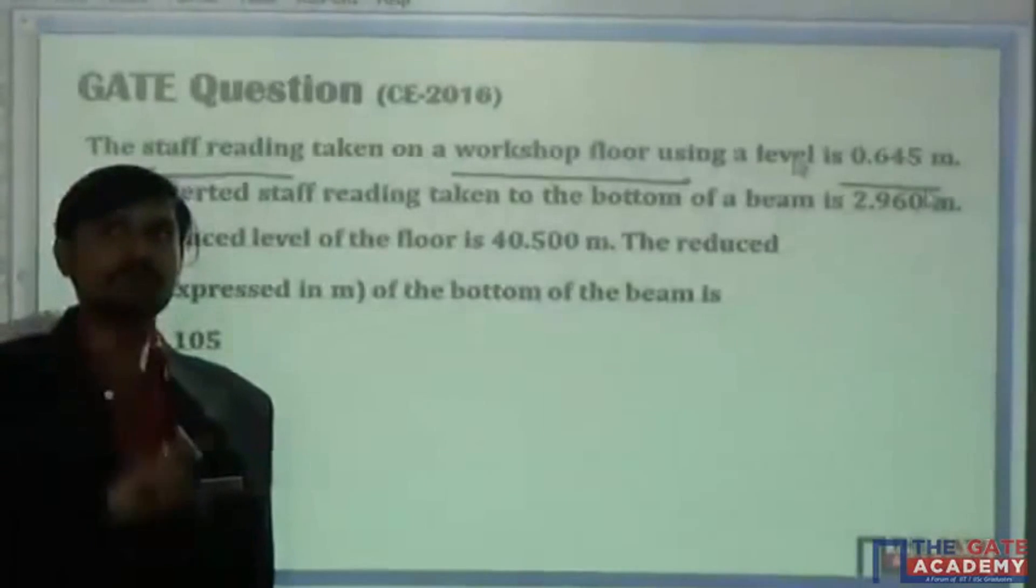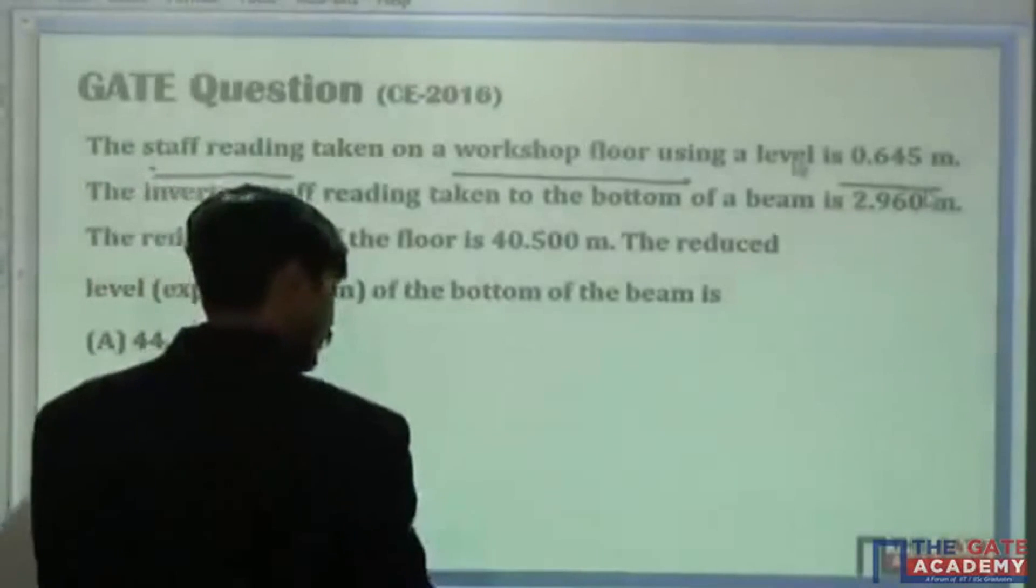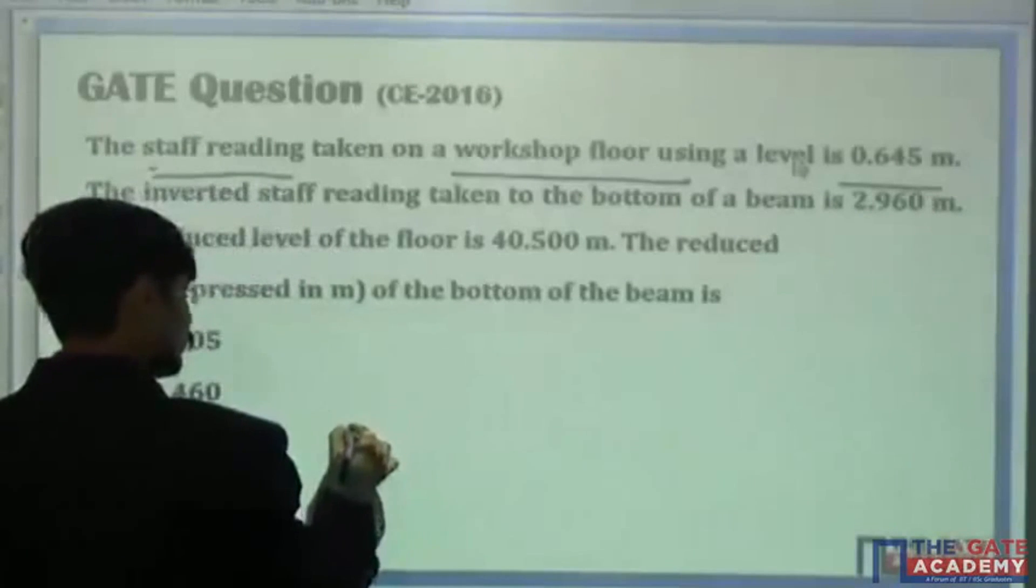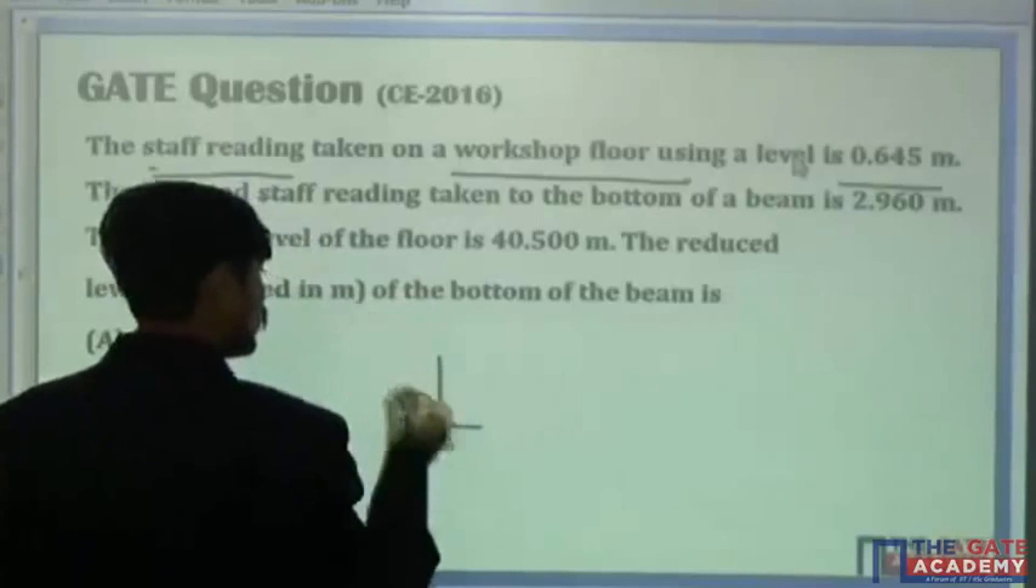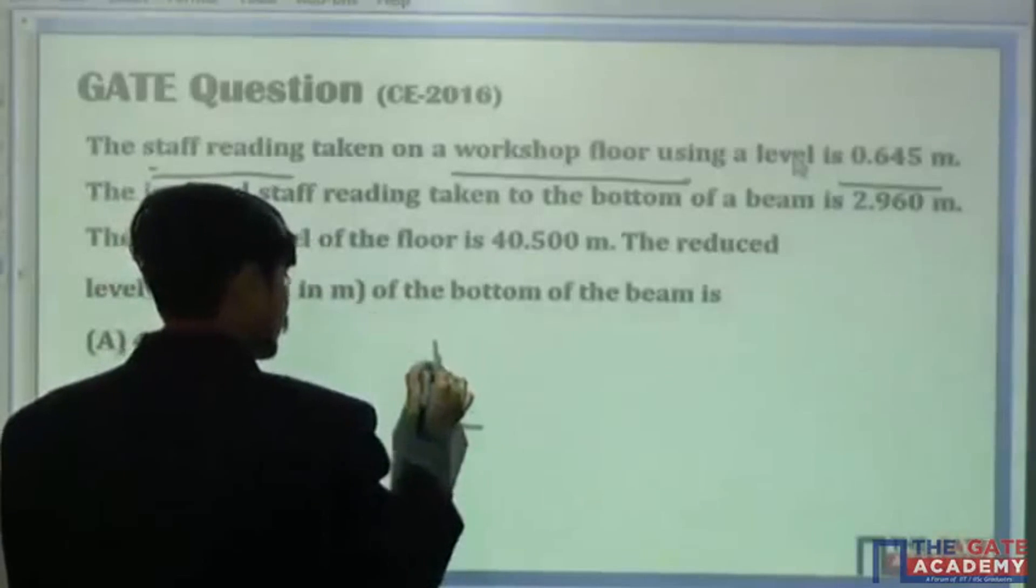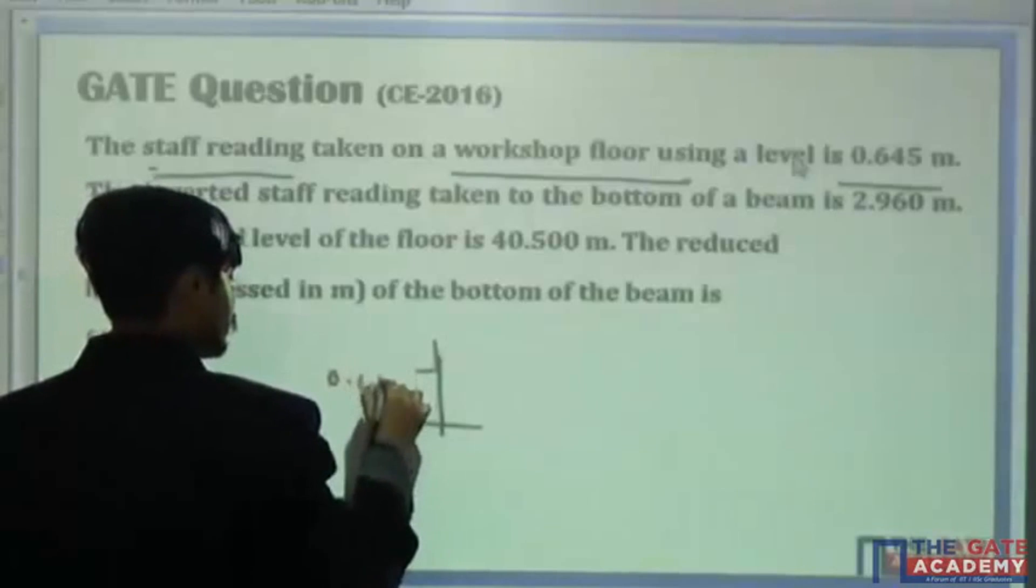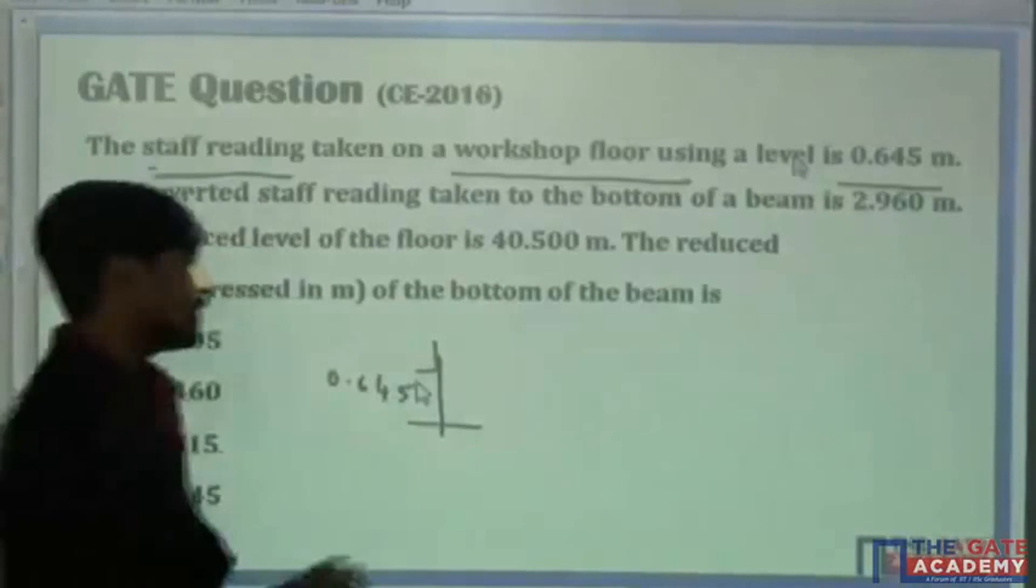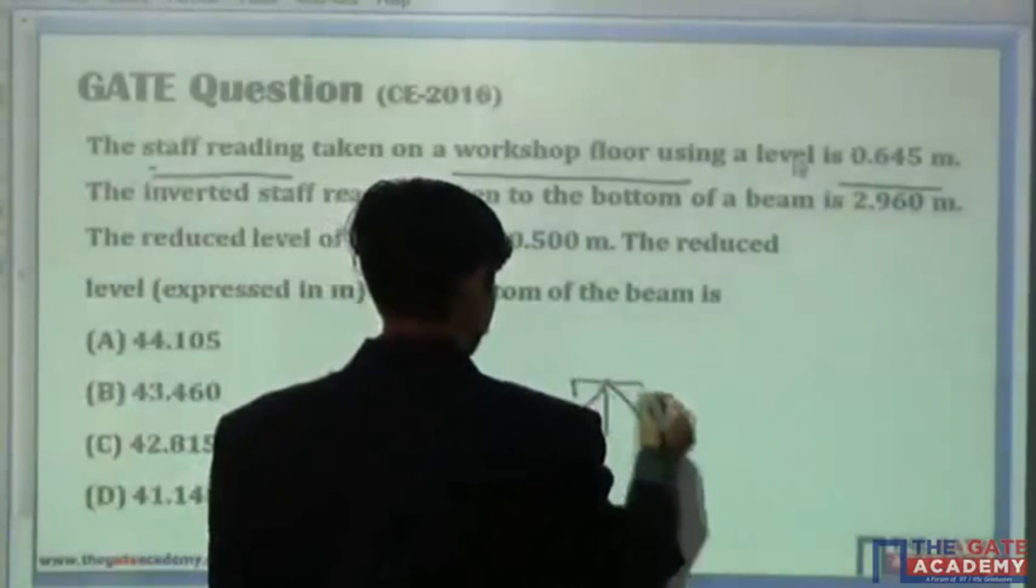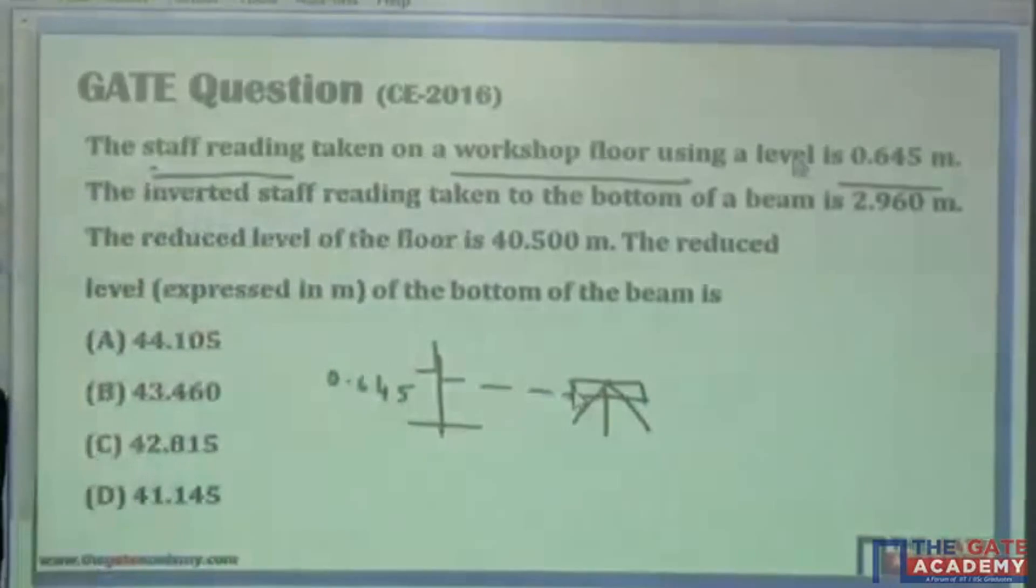The inverted staff reading. There is one more staff reading. Do not confuse. See here, I will just draw the figure. Okay, consider this is the ground floor. Here there is a staff kept and the reading is taken. The reading is 0.645. Consider this is your instrument.